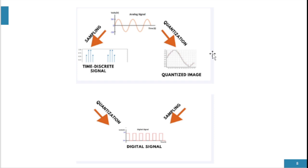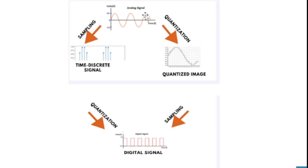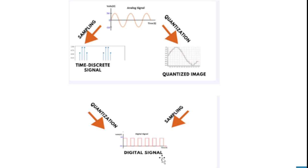Here we can see how analog signals are converted into digital signals. First, we have analog signals that vary with time and voltage. We convert them by the sampling process into discrete signals — time-discrete signals. After that, by the quantization process, they are converted into digital signals. The quantized image shows the value of each interval and each point. So the process of digitalizing analog signals into digital signals is called sampling and quantization: first we apply sampling, then we apply quantization.